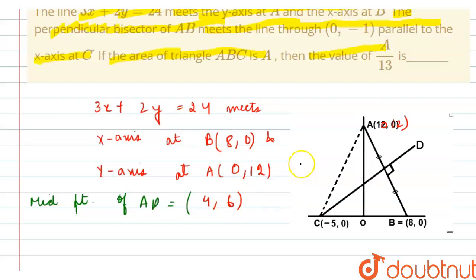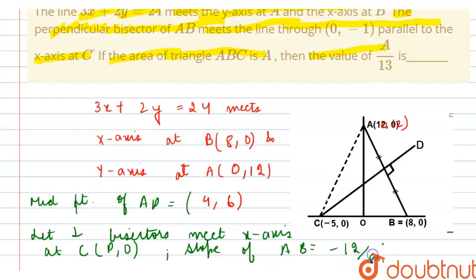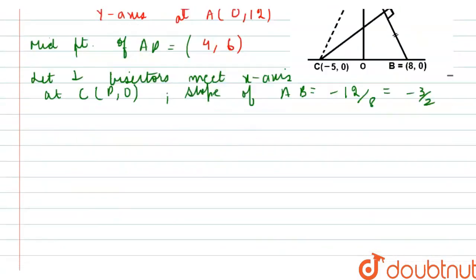Now, let the perpendicular bisector meet x-axis at point C. Let the coordinates be (p, 0), y-coordinate would be 0 since it's on x-axis. Slope of AB is minus 12 upon 8, which we can write as minus 3 upon 2.